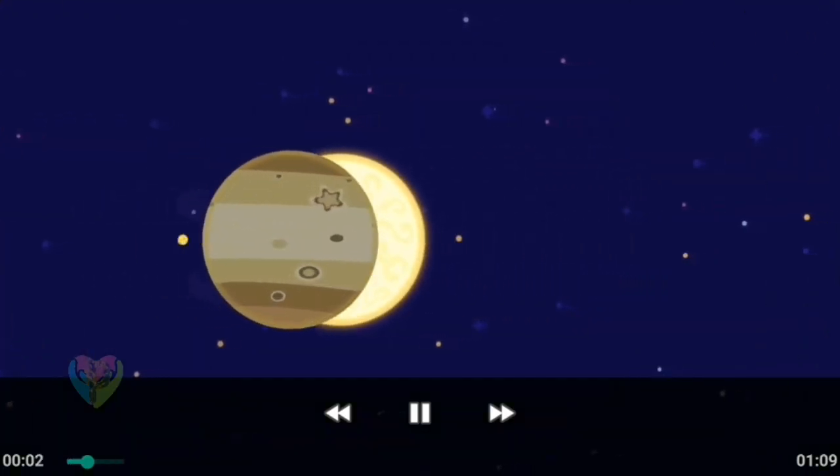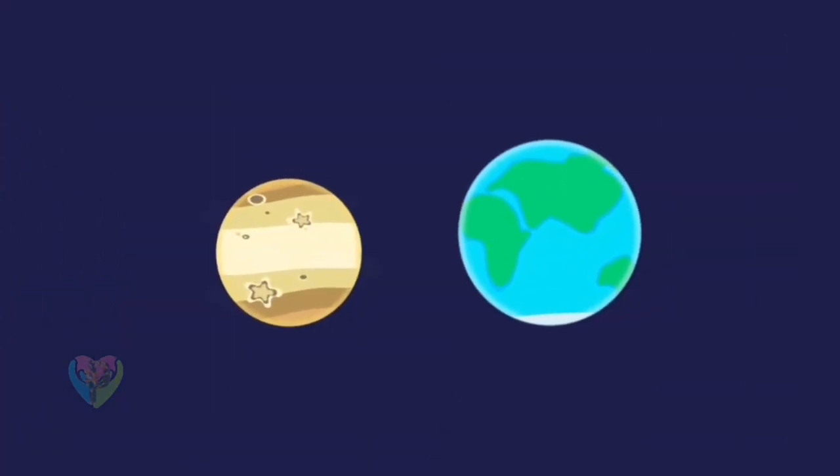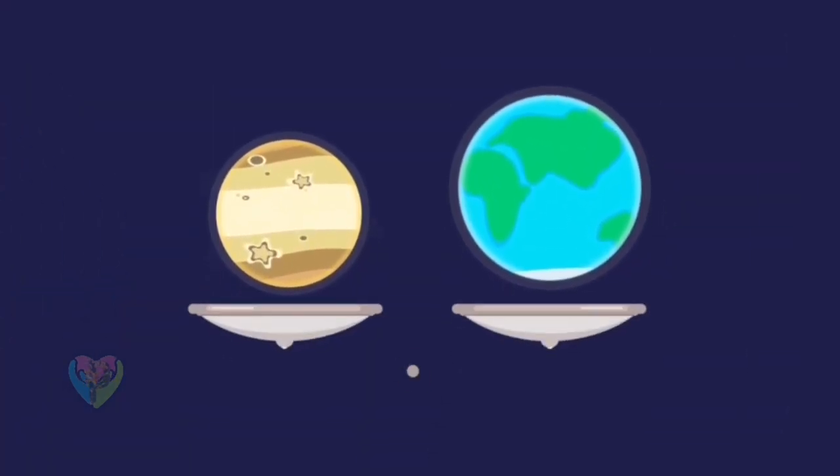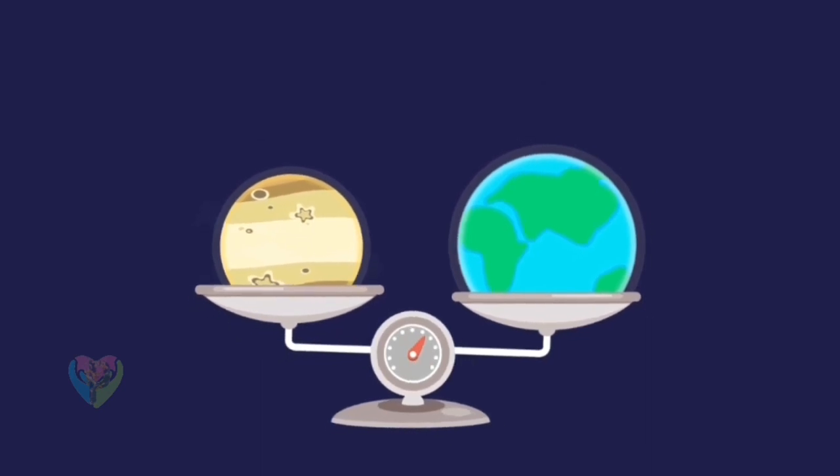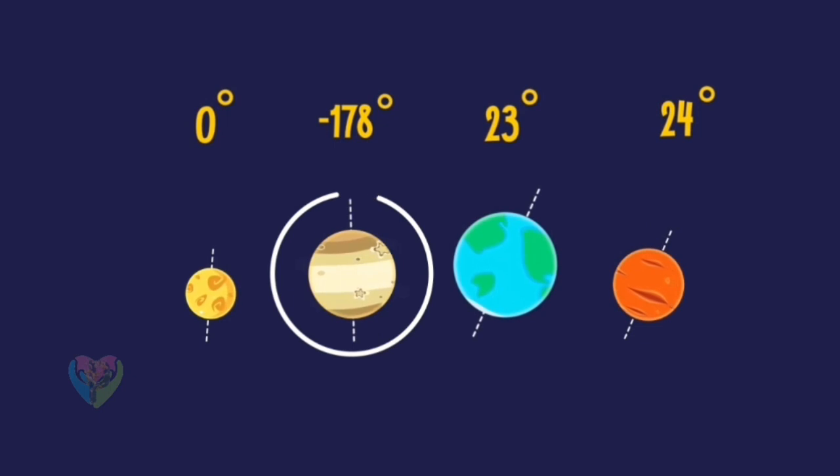Meet Venus, the second planet from the sun. It is very similar to the Earth. It, too, has an atmosphere, and it is roughly the same size and weight. But unlike other planets, Venus rotates in the opposite direction, and very slowly.